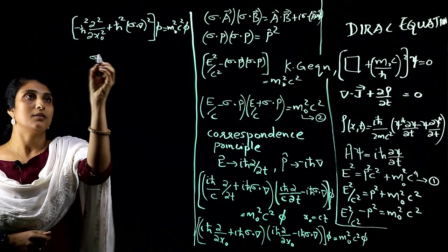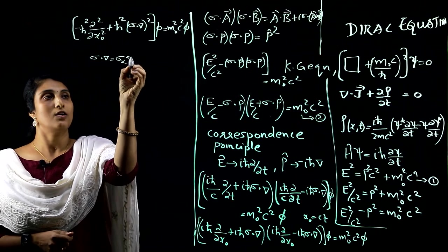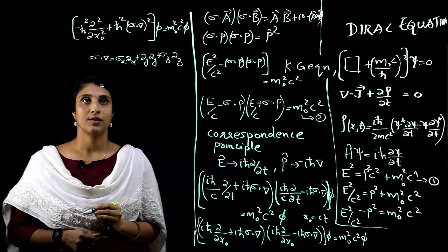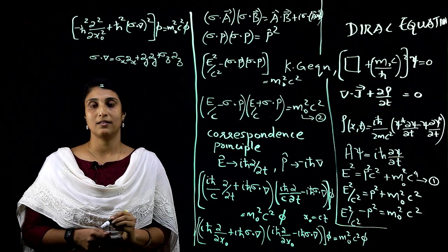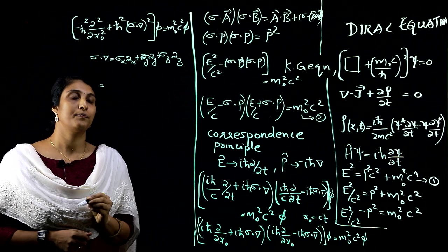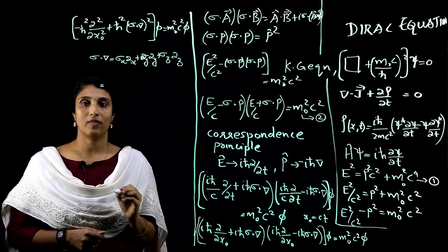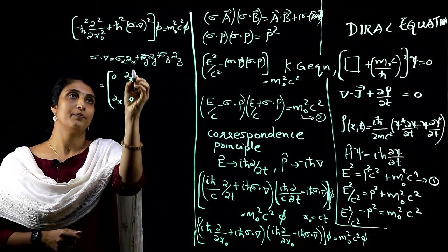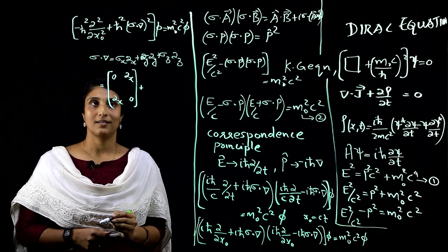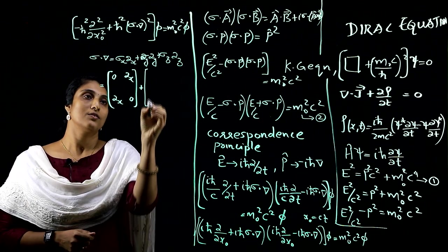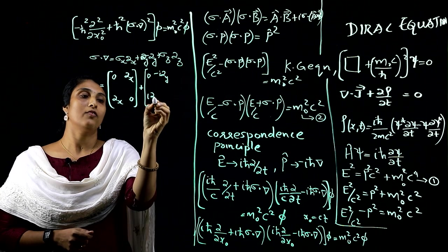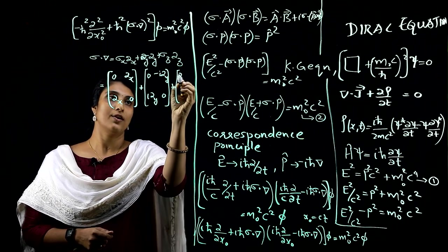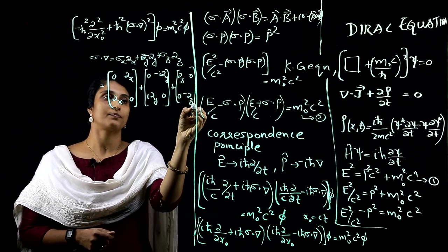Now we determine (σ·∇)²: σ·∇ = σₓ∂ₓ + σᵧ∂ᵧ + σᵤ∂ᵤ. With σₓ = [[0,1],[1,0]], σᵧ = [[0,−i],[i,0]], σᵤ = [[1,0],[0,−1]], we get σ·∇ as the 2×2 matrix [[∂ᵤ, ∂ₓ−i∂ᵧ],[∂ₓ+i∂ᵧ, −∂ᵤ]]. Computing (σ·∇)² gives ∂ₓ² + ∂ᵧ² + ∂ᵤ² = ∇², since cross terms cancel.